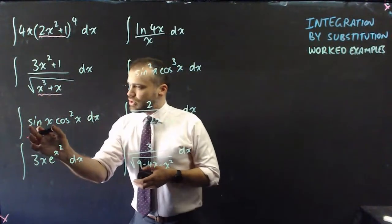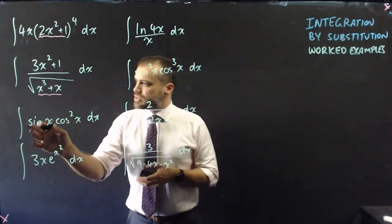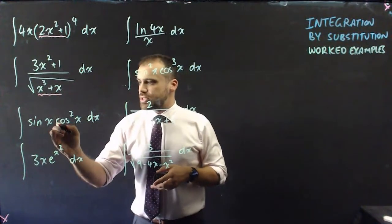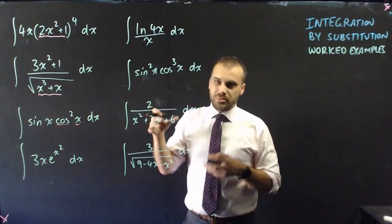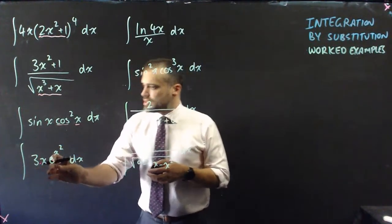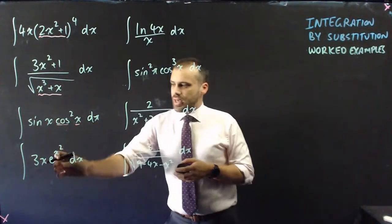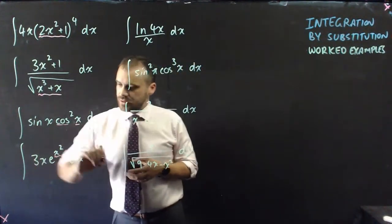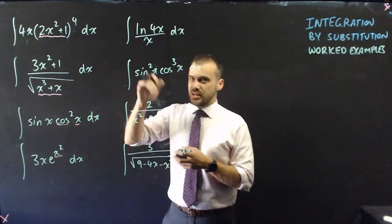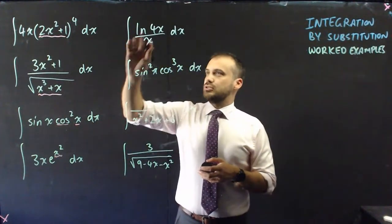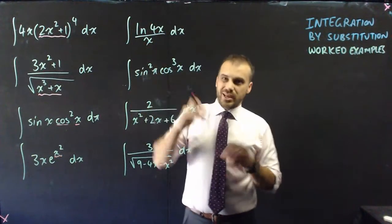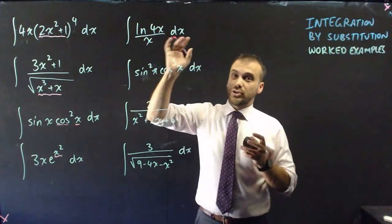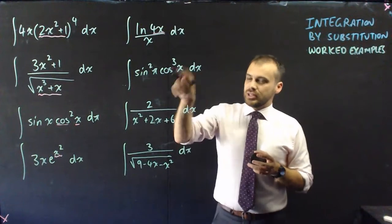For the integral of sin(x)·cos²(x): cos²(x) is cos(x) all squared, and cos(x) — not cos²(x) but cos(x) — is going to be your u. For 3x·e^(x²), e with x² inside of it is your u; it's the thing inside the function. For the integral of ln(4x)/x, the 4x inside the log function gives your u value.